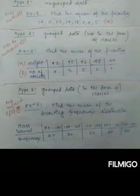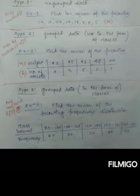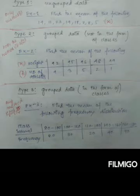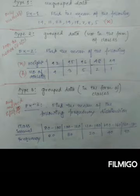I have categorized data into three types: Type 1, Type 2, and Type 3. Type 1 is ungrouped data — it will be given as just some numbers, no boxes or columns. Type 2 is grouped data not in the form of classes; here you will see two columns — one for the variate (for example, weight) and one for frequency (number of athletes). These are represented as xi and fi.